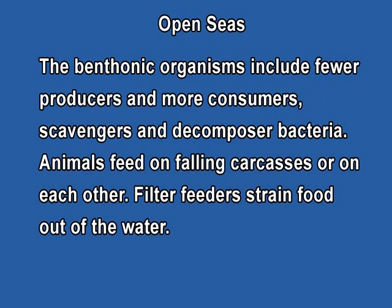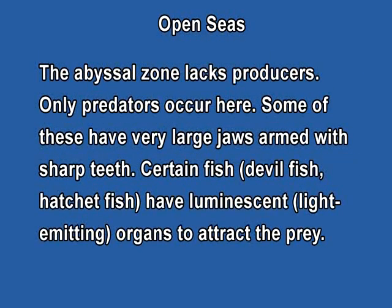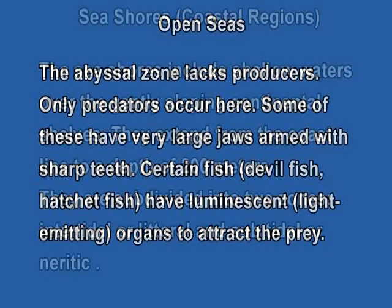The abyssal zone lacks producers because there is no light — only predators occur here. Some of these have very large jaws armed with sharp teeth. Certain fishes like devil fish and hatchet fish have luminescent organs which emit light continuously to attract prey.